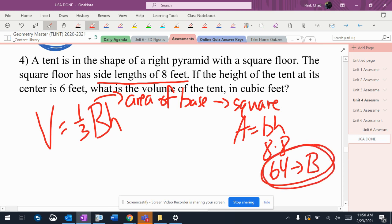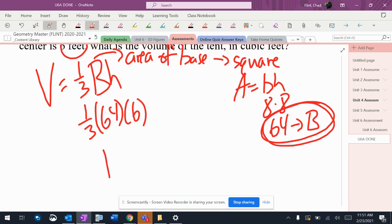The area of the base. So right now I have one-third times 64. It says the height of the tent—that's the height of the pyramid—is 6 feet, so times 6. I'm gonna put that into my calculator and I end up getting 128.